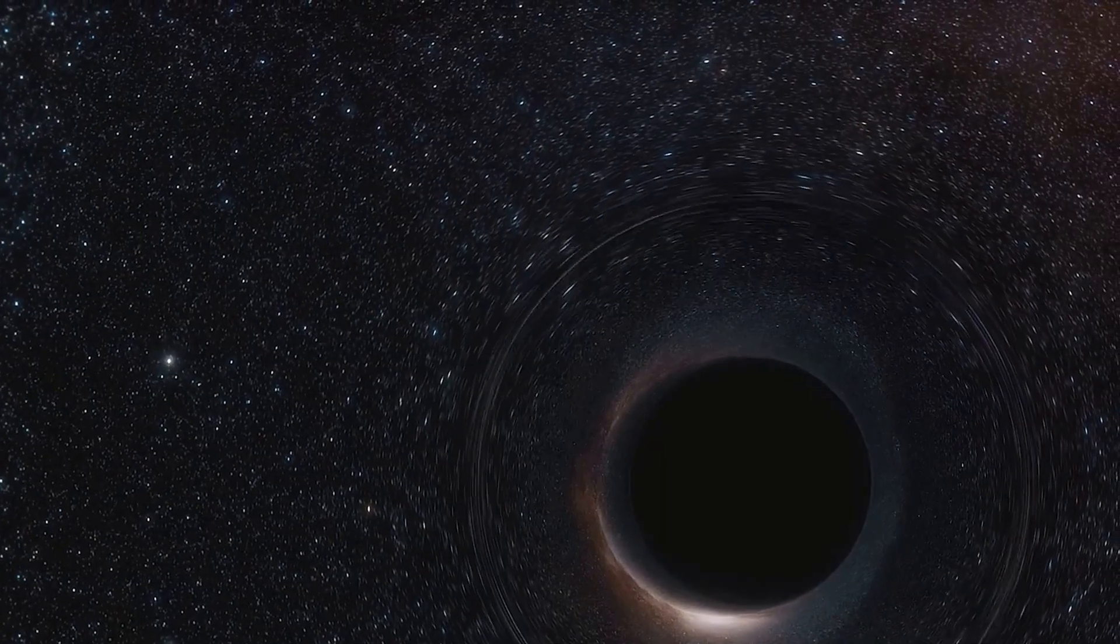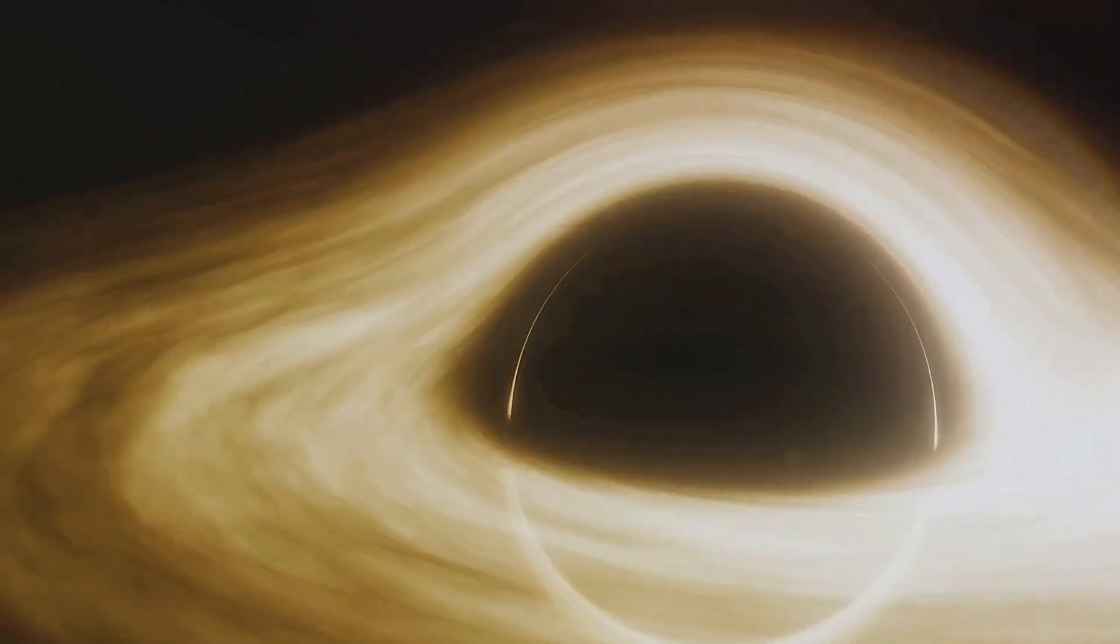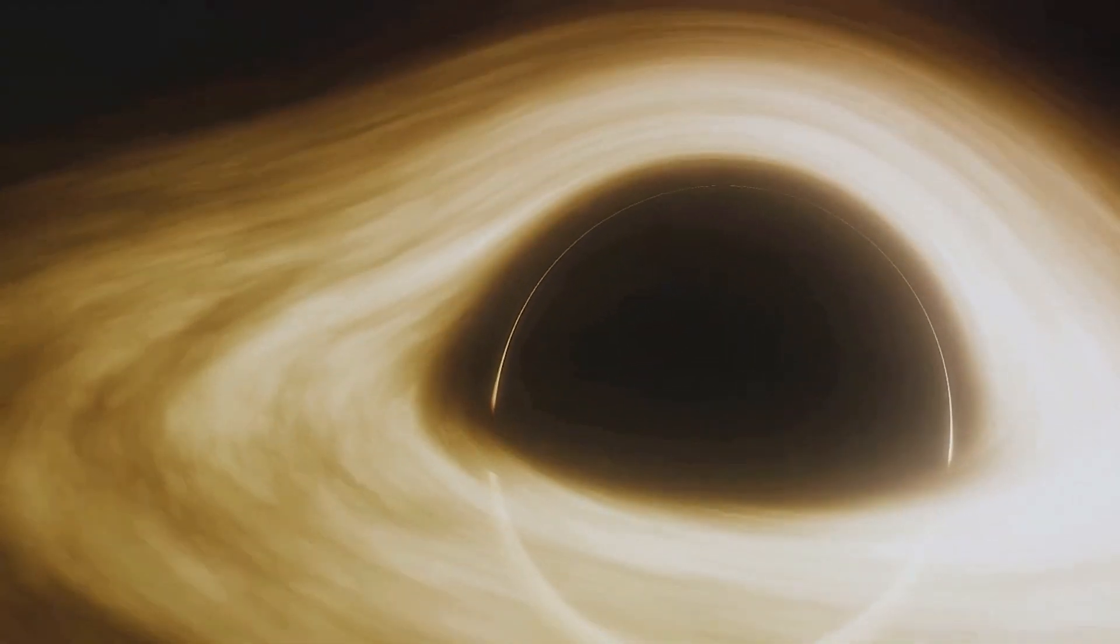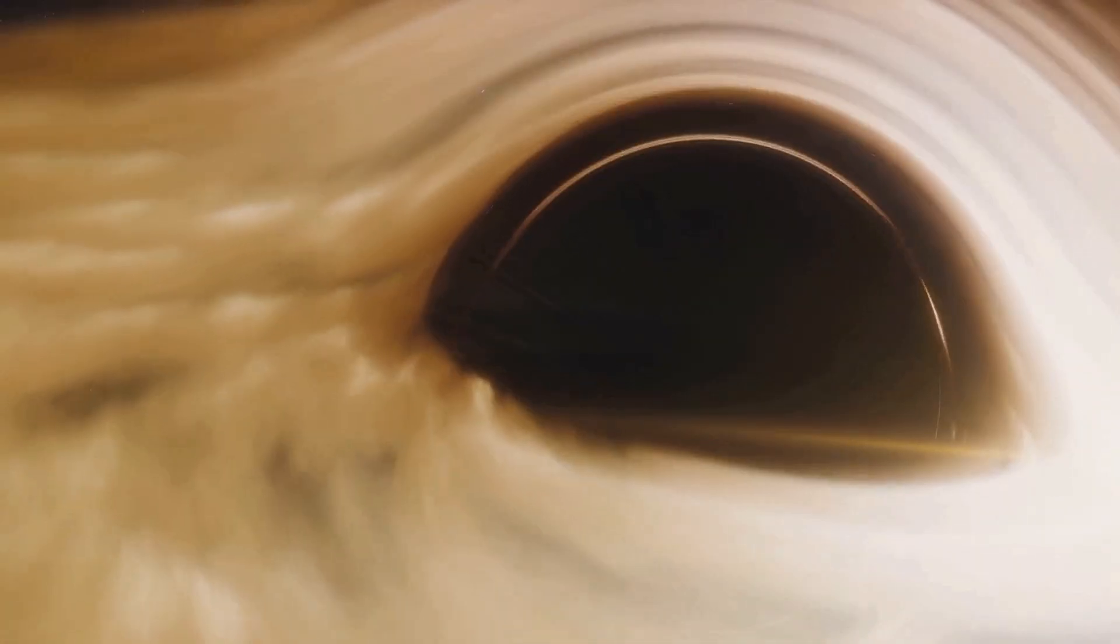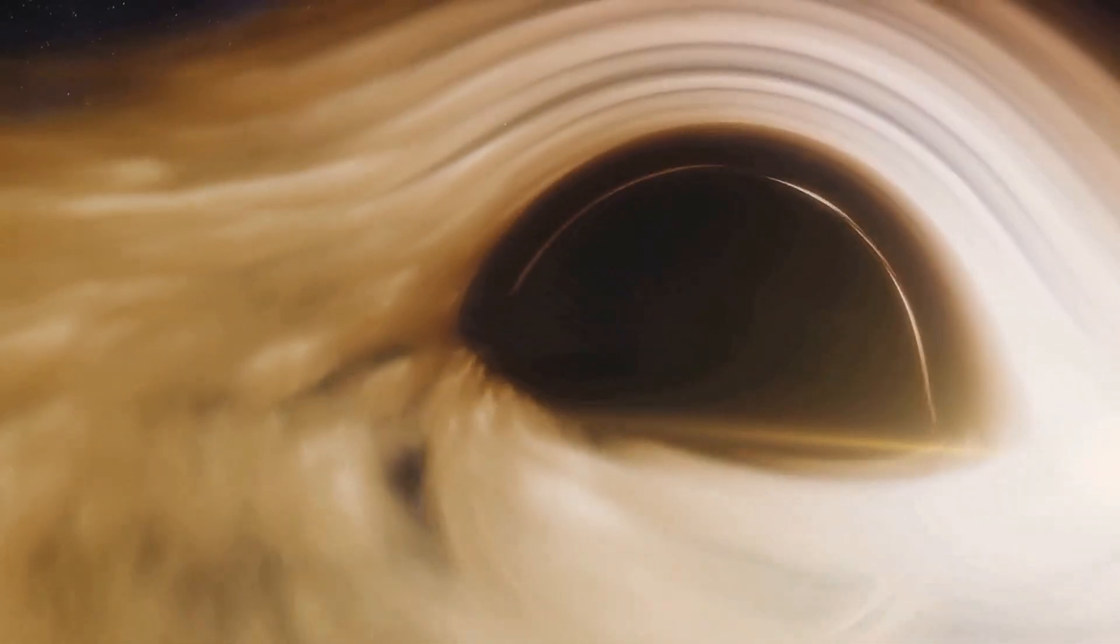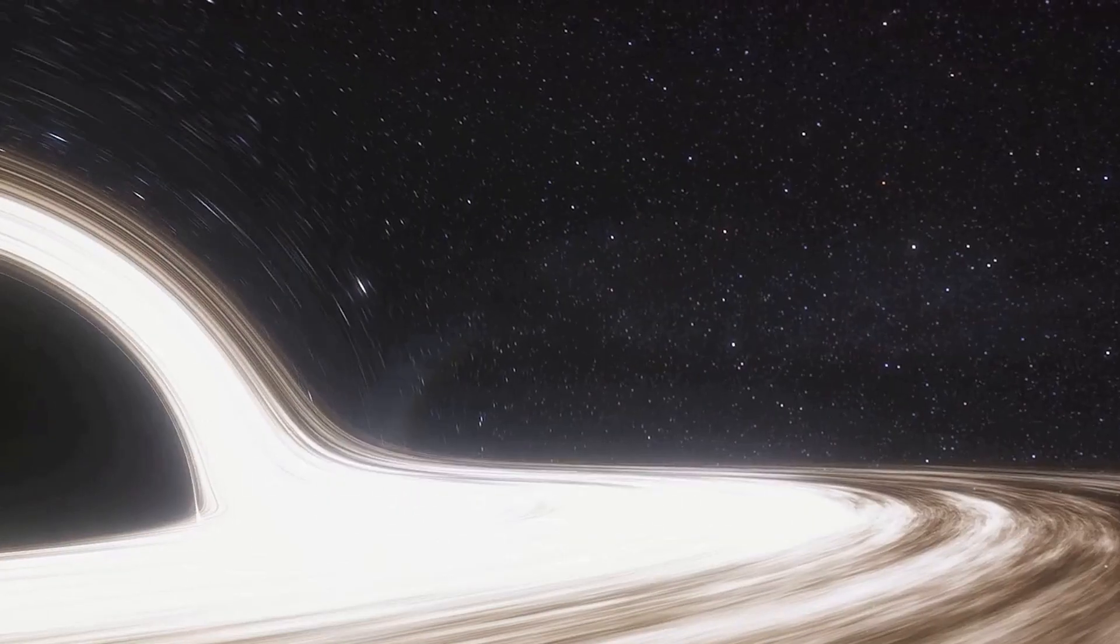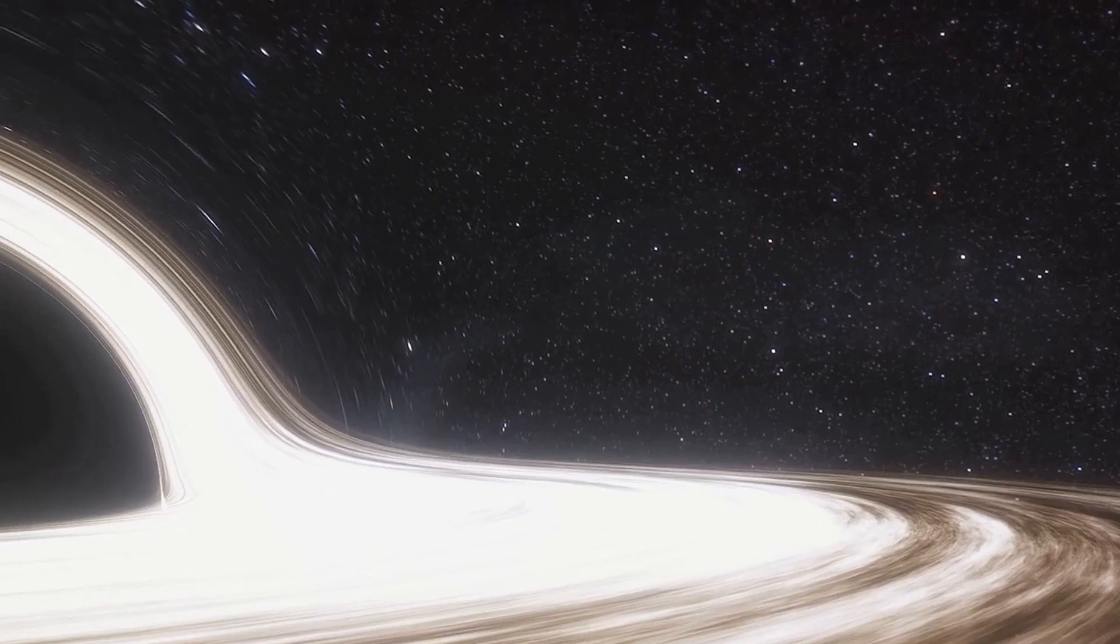The event horizon acts as the point of no return. It's like crossing into a realm where the rules of physics are twisted and reshaped. To an outside observer, objects approaching this boundary appear to slow down and never actually pass through. They are frozen in time, smeared across the cosmic horizon.